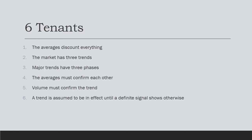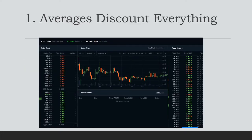There are six key tenets to Dow Theory, and we'll be going over the first three in this video and the second three in the next video. They are: averages discount everything; the market has three trends; major trends have three phases; the averages must confirm each other; volume must confirm the trend; and a trend is assumed to be in effect until a definite signal shows otherwise.